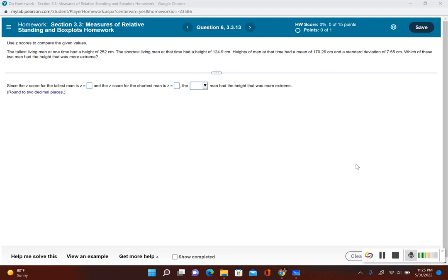For this problem, it says the tallest living man at one time had a height of 252 centimeters. The shortest living man at the time had a height of 124.9 centimeters. Heights of men at that time had a mean of 170.26 and a standard deviation of 7.55. Which of these two men had a height that was more extreme?